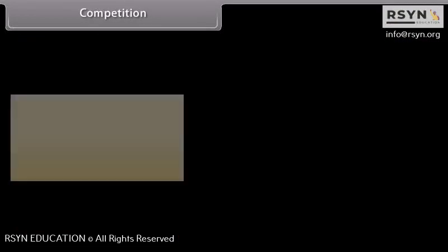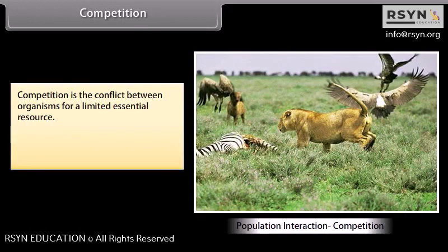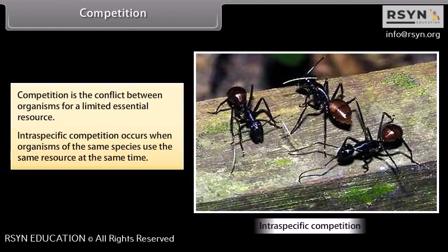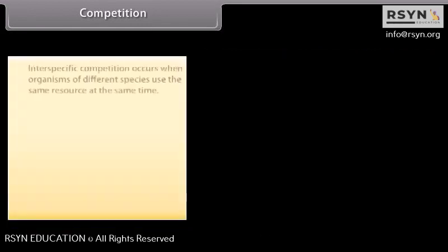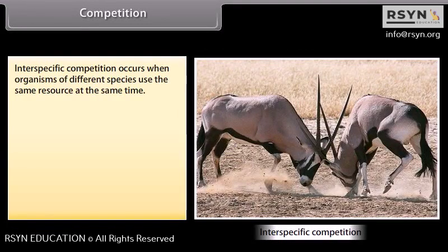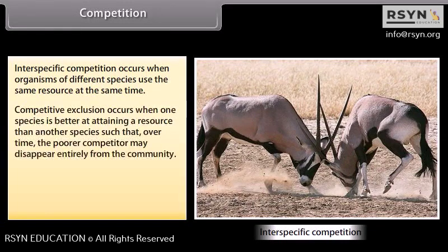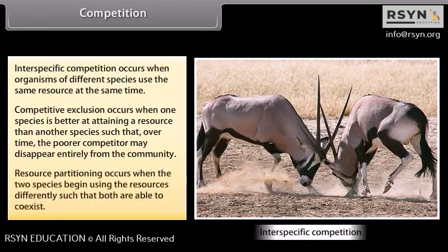Competition is the conflict between organisms for a limited essential resource. Intraspecific competition occurs when organisms of the same species use the same resource at the same time. Competitive exclusion occurs when one species is better at attaining a resource than another, such that over time the poorer competitor may disappear from the community. Resource partitioning occurs when two species begin using resources differently such that both are able to coexist.